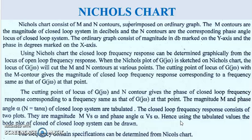The M contours are the magnitude of the closed loop system in decibels and the N contours are the corresponding phase angle locus of the closed loop system. The ordinary graph consists of the magnitude in decibels marked on the y-axis and the phase in degrees marked on the x-axis.